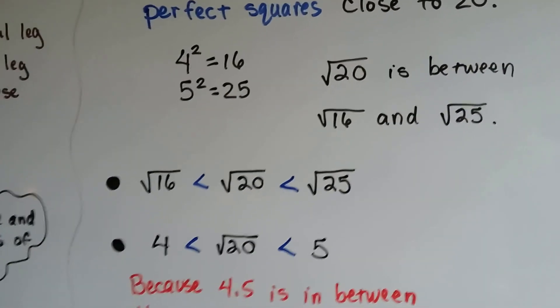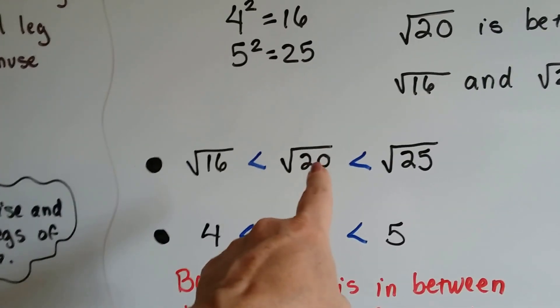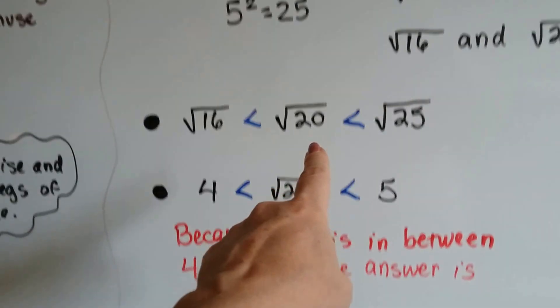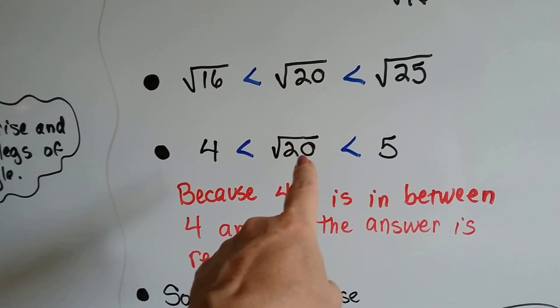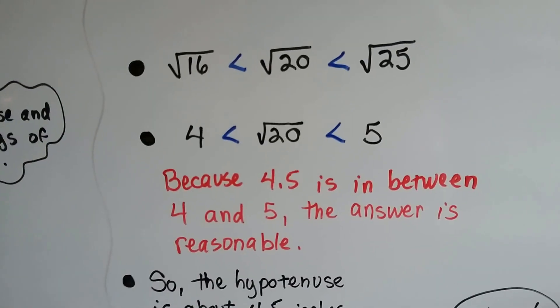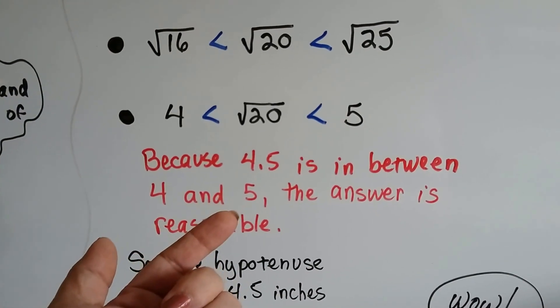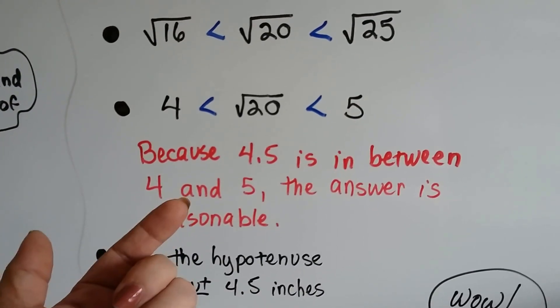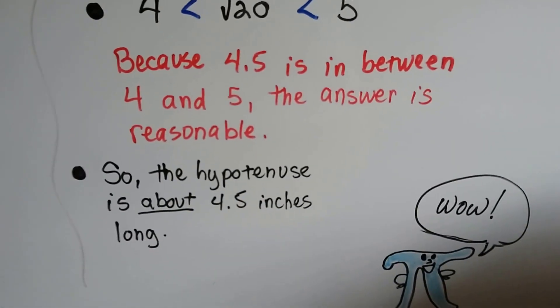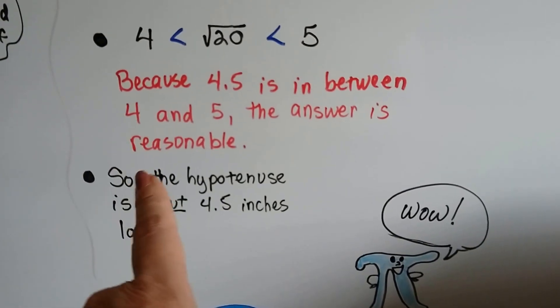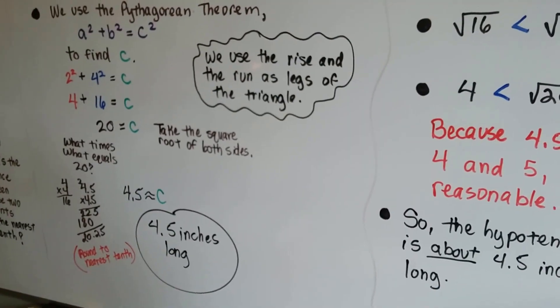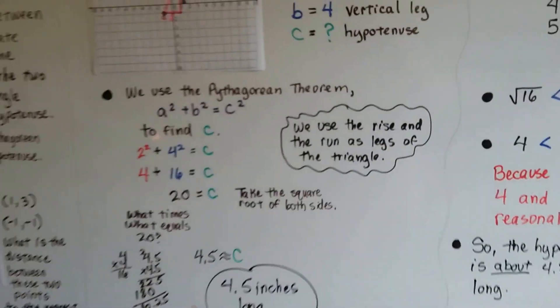It's going to be right in between these two. So that means the square root of 20 is greater than 16 but less than 25. The square root of 20 is greater than 4 and less than 5. And because 4.5 is greater than 4 and less than 5, the answer is reasonable. So the hypotenuse is about 4.5 inches long. Now, remember, it's about 4.5 inches long because we rounded it to the nearest tenth. Remember? Okay.